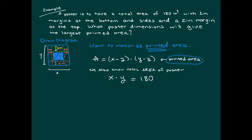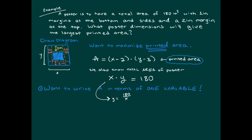Our goal is to maximize the printed area, not the total area — that's fixed at 180. The printed area formula is (x minus 2) times (y minus 3), but we need this expressed in one variable. The total area equals 180 is our constraint, so we solve for y in terms of x and substitute that expression into the printed area formula.